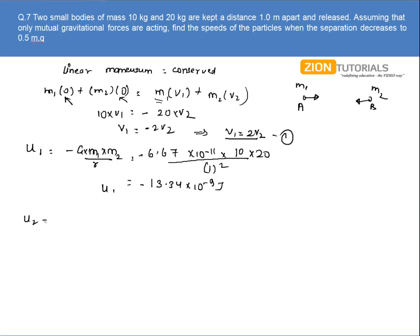And I will calculate the potential energy when the distance between them is 0.5. So it will be minus G M1 into M2 by R. It will be minus 6.67 into 10 to the power minus 11 into 10 into 20 divided by 0.5. So it is nothing but minus 13.34 into 10 to the power minus 9 into 4 joules.